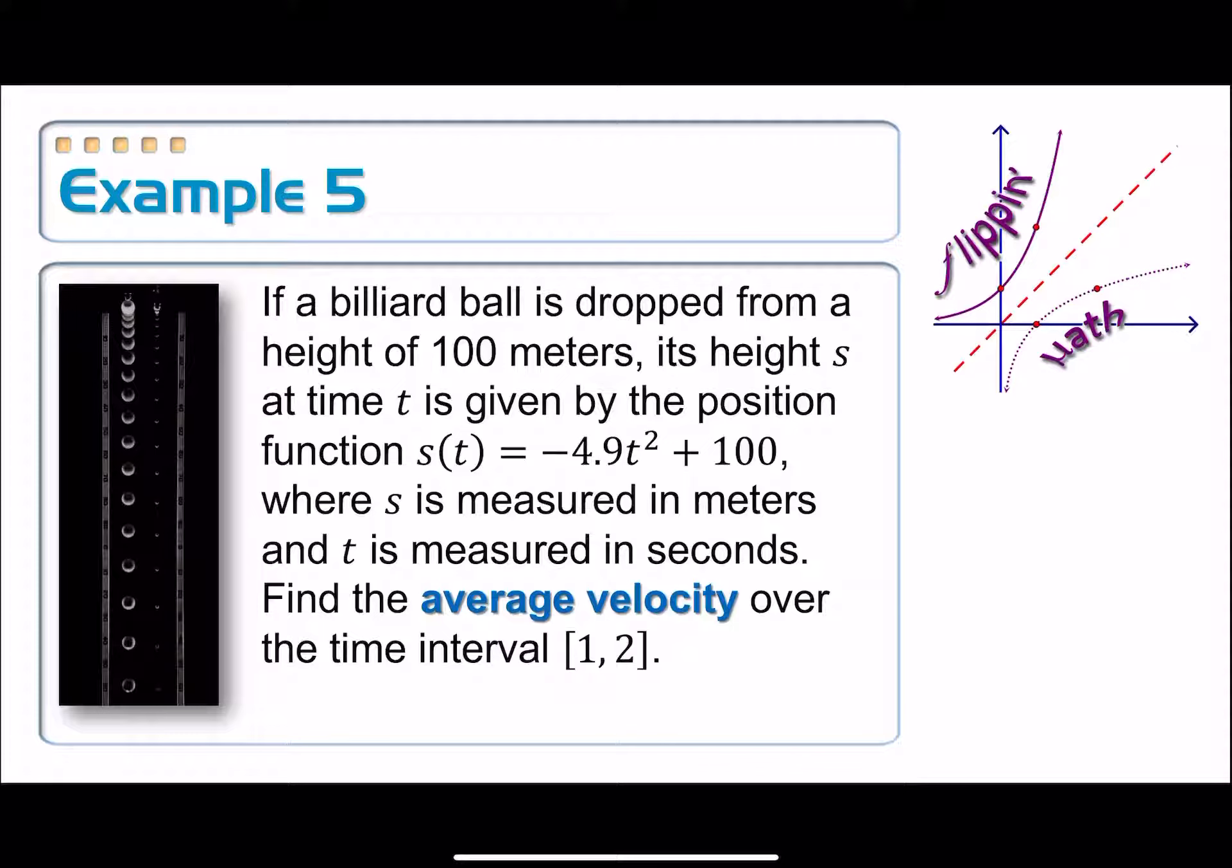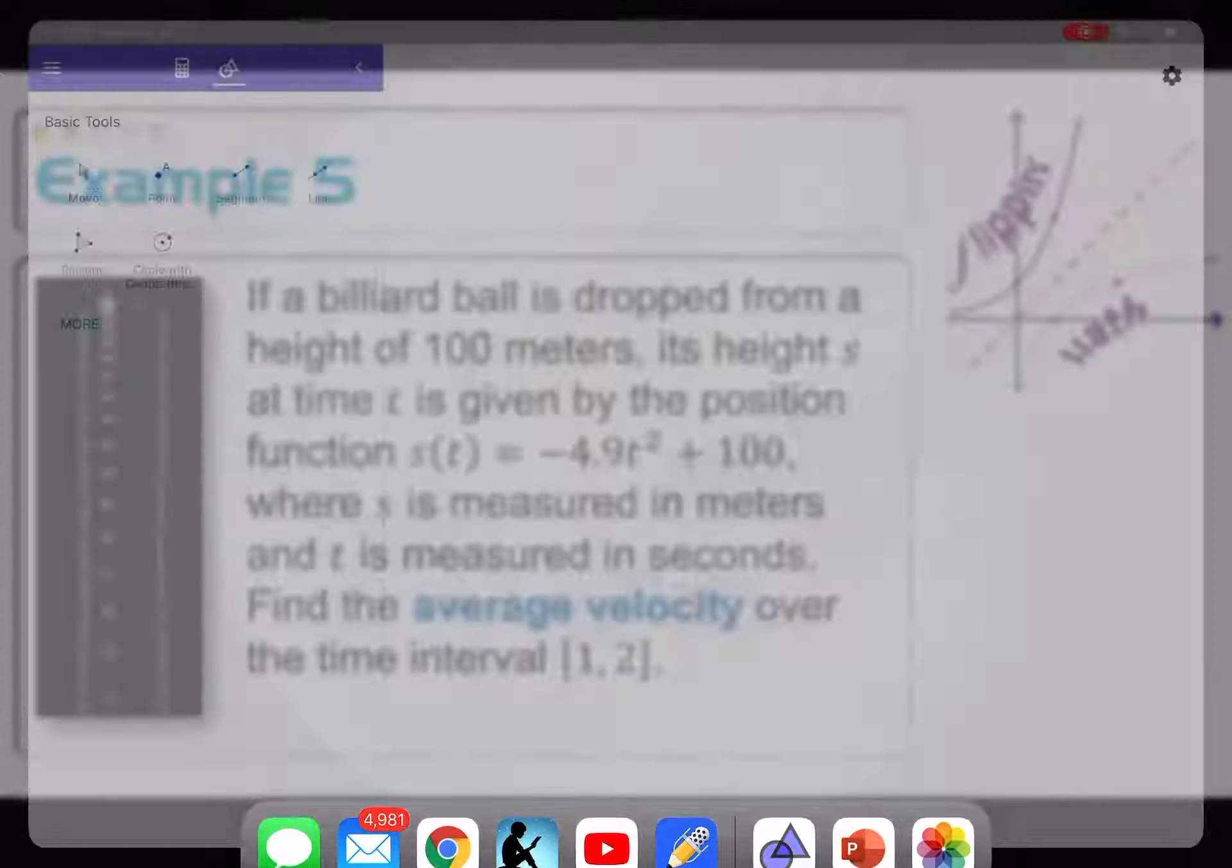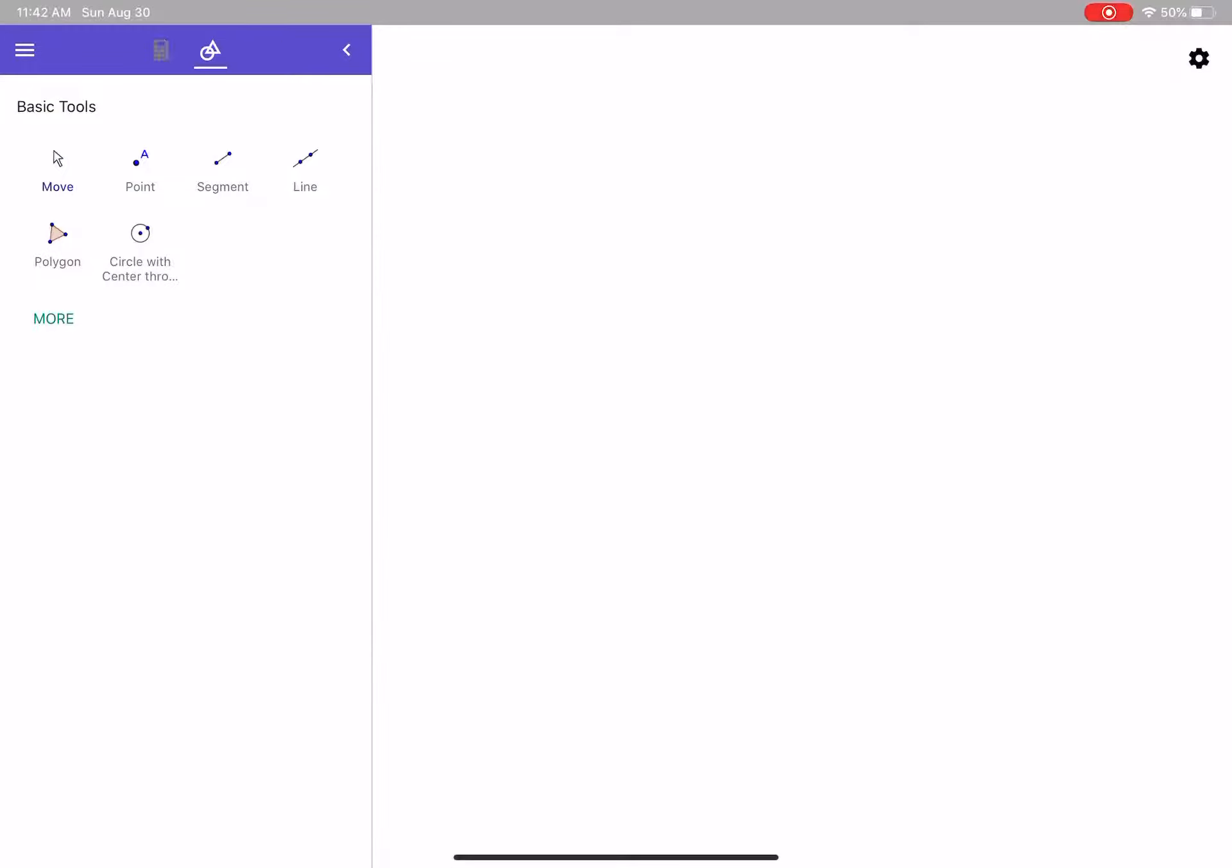So for this one, it's very simple. All we have to do is find the slope between these two t values. And so I'm going to pull up this time GeoGebra, also a free app. You can easily use your calculator.